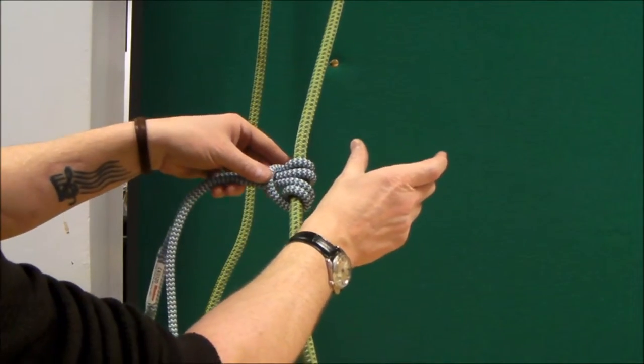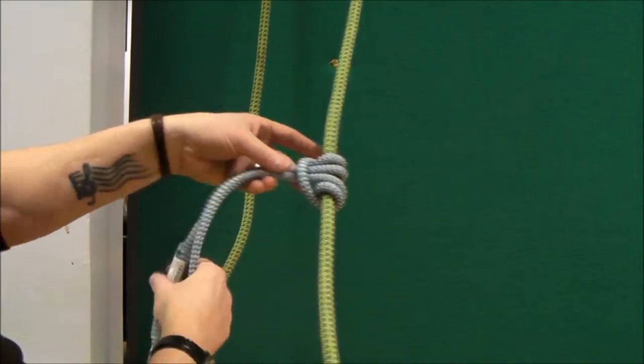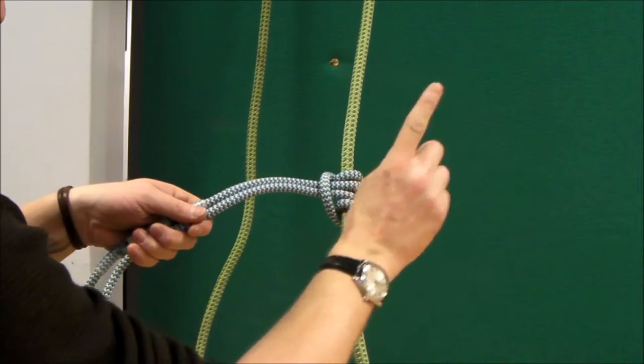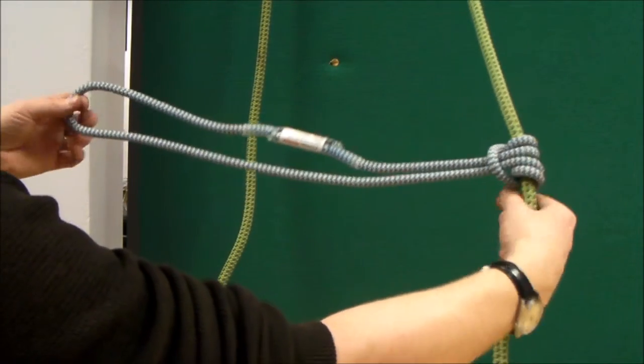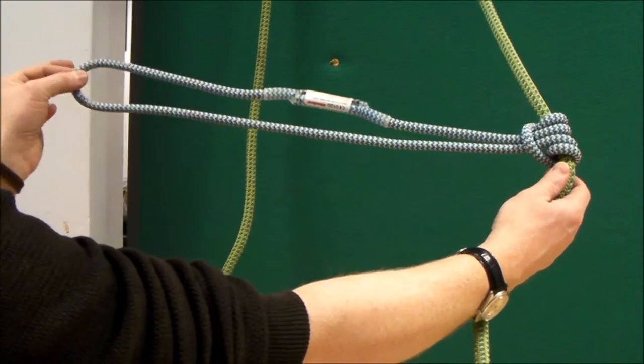Now I did mention that the knot here, this knot, had to be halfway here. And if it is, when you tie your Prussik loop, it will be halfway there when it's tied.